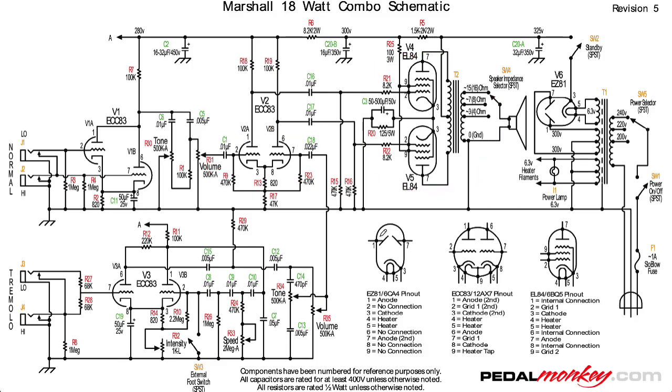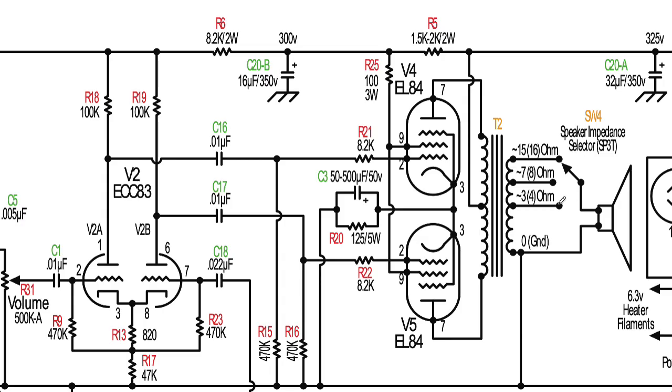Zooming in a little bit, we see that the user can select between different taps on the transformer to select for different speaker impedances, and notice there's this interesting notation. I have 5, 7, and 3 ohms, but in parentheses, it looks like there's another version that had 16, 8, or 4 ohms.